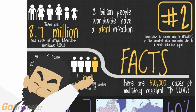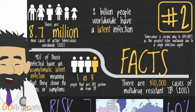Fun facts. In 2011 there were 8.7 million new cases of active tuberculosis worldwide. In that same year there were 1.4 million deaths caused by tuberculosis. Today there are 2 billion people worldwide that have a latent infection. 90% of those infected have asymptomatic latent infection, meaning they show no symptoms. Tuberculosis is second only to HIV/AIDS as the greatest killer worldwide due to a single infectious agent.